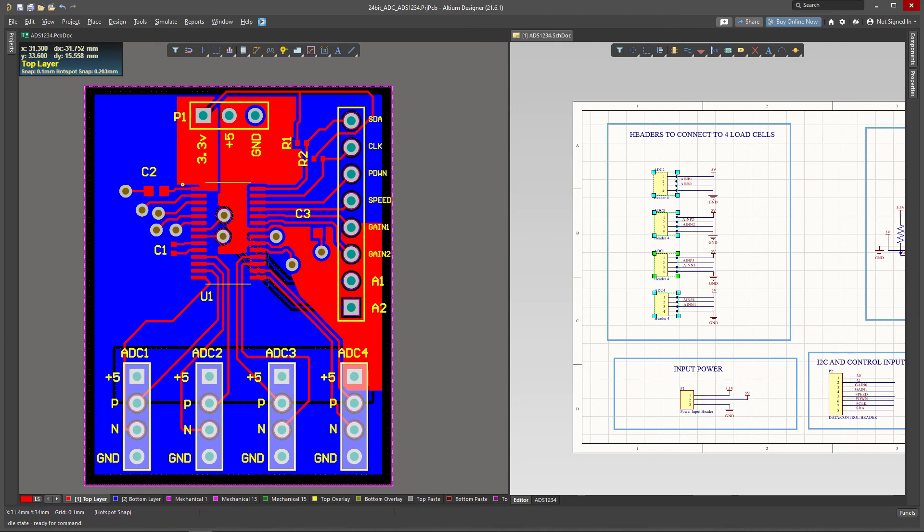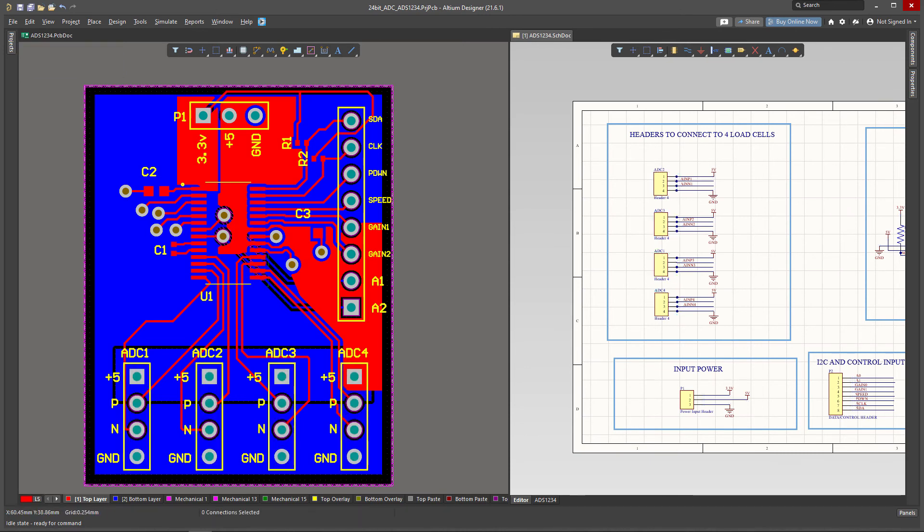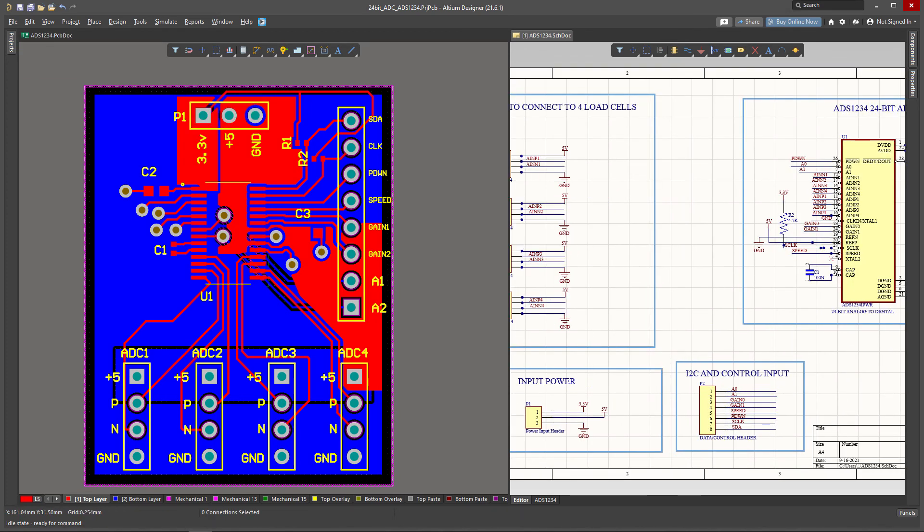Then we have the input power which is connected on top. And then we have the external ways of controlling this I2C reading data as well as controlling the chip. And this is placed here, so this is how it's going to look like in a 3D model. It's a very bare minimum breakout board.